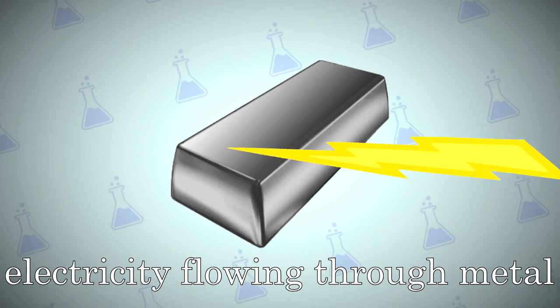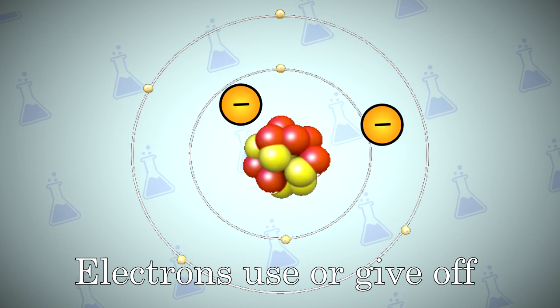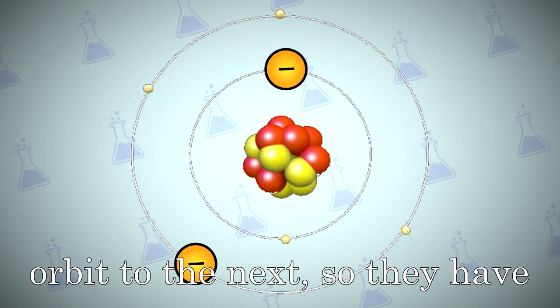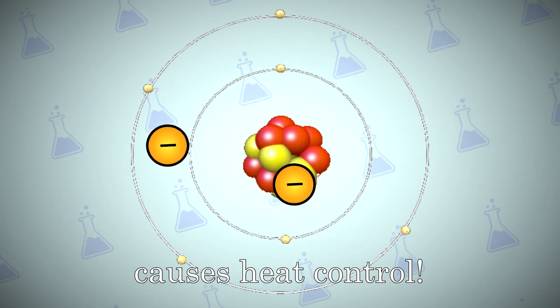The Peltier Effect says that electricity flowing through metal can cause temperature changes. Electrons use or give off energy whenever jumping from one orbit to the next, so they have a direct connection with temperature, which means jumping electrons causes heat control.